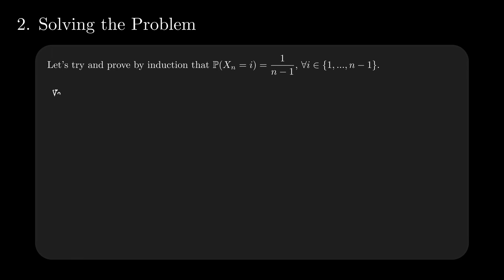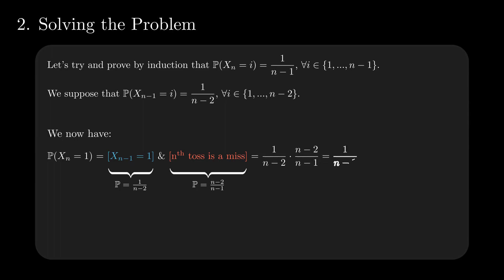Start by assuming this conjecture is true for some n-1. For the event X_n equals 1, the only possibility is that X_{n-1} is 1 and the n-th toss is also a miss. From the induction assumption, the probability of the first event is 1/(n-2), and the miss after n-2 misses from n-1 tries has probability (n-2)/(n-1). Multiply the two and the result is 1/(n-1).